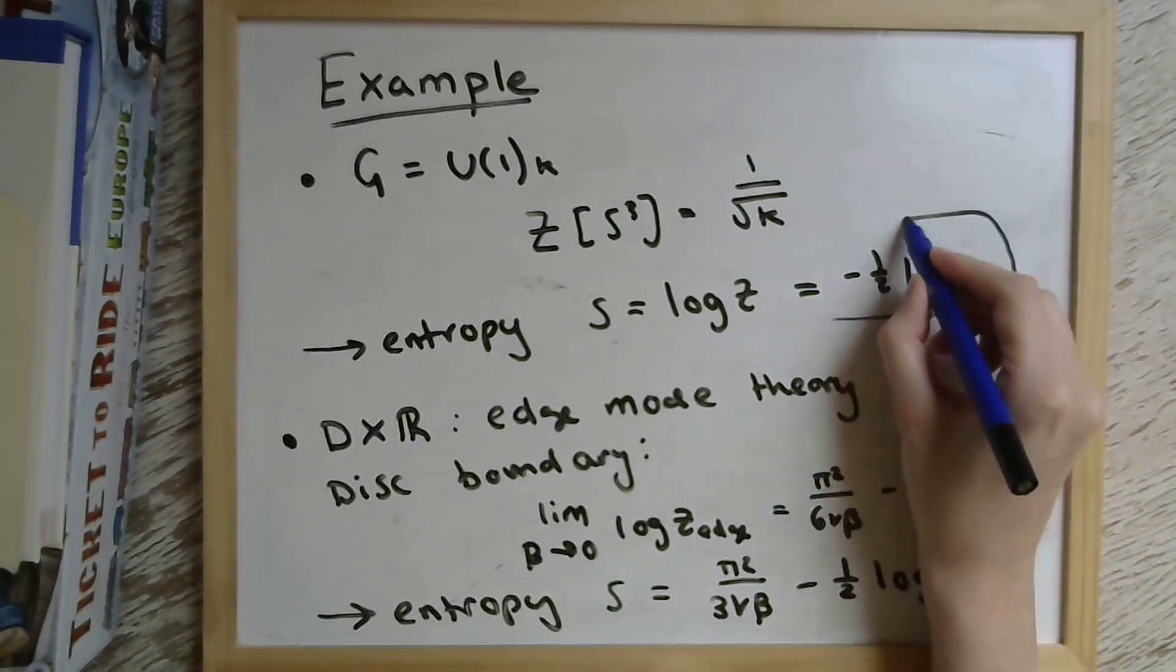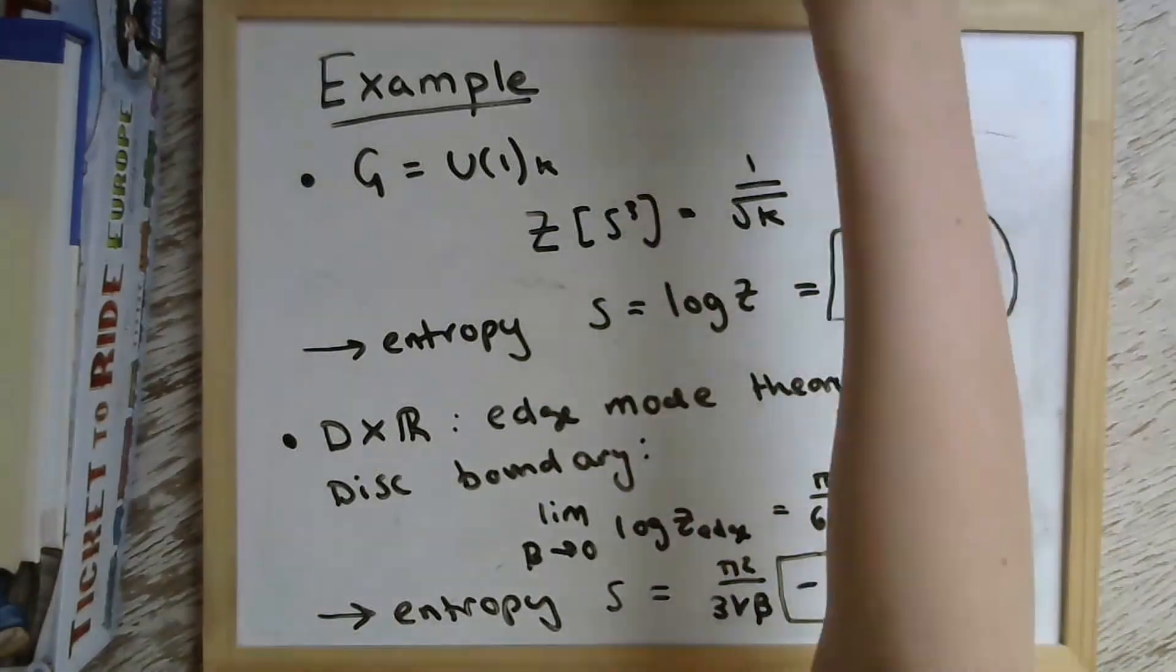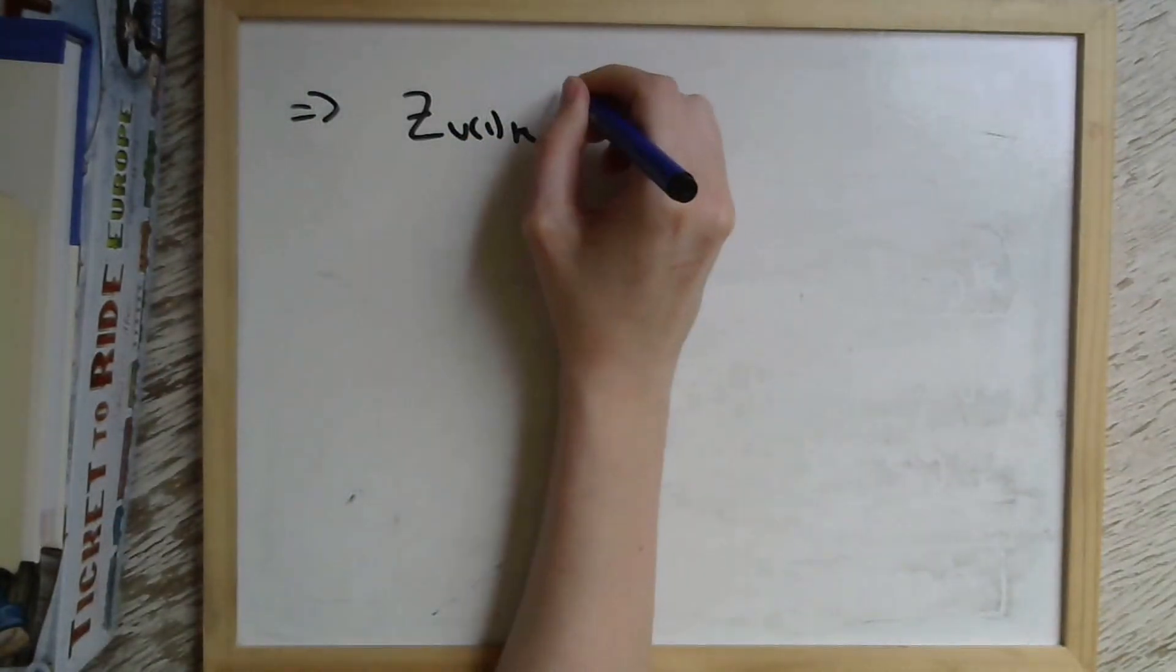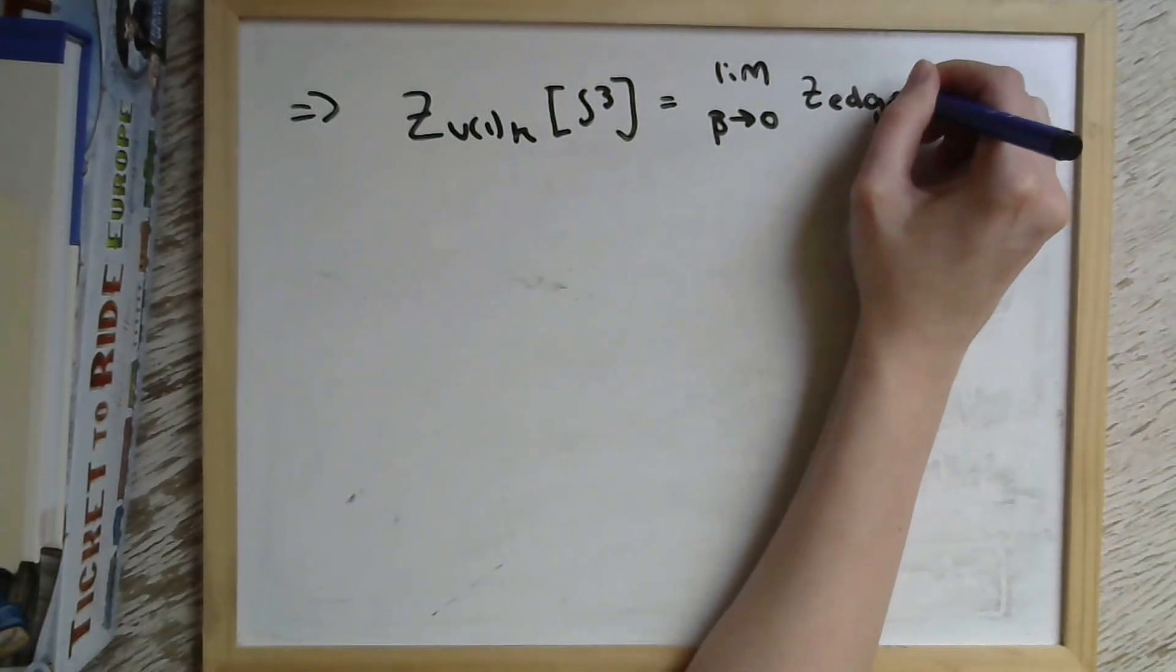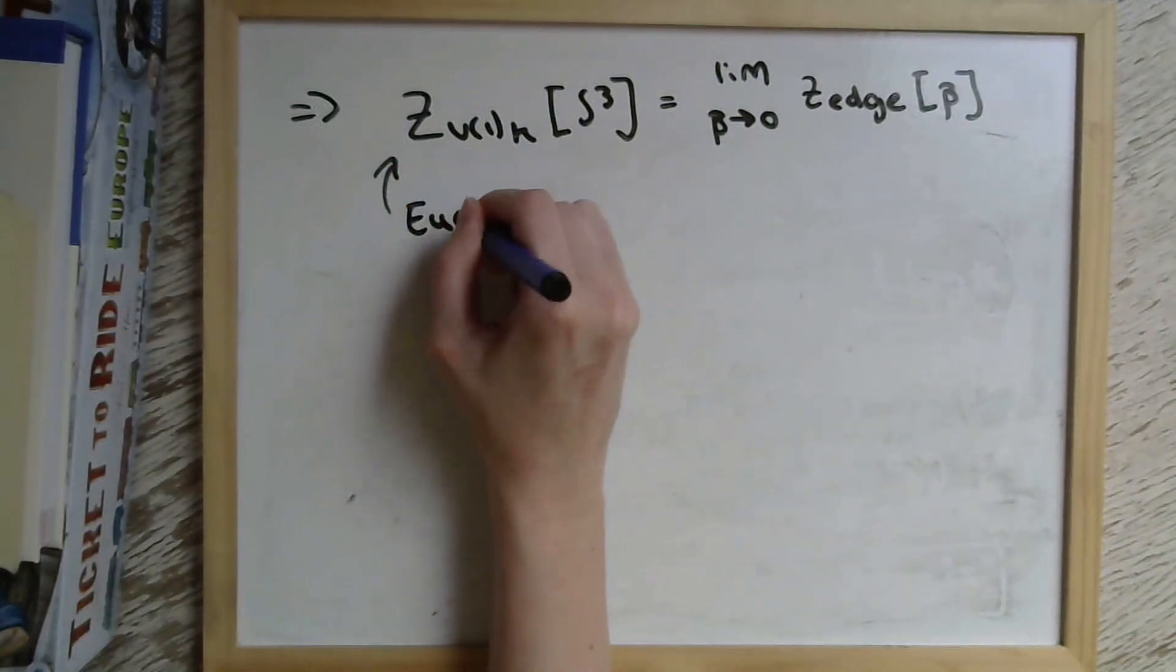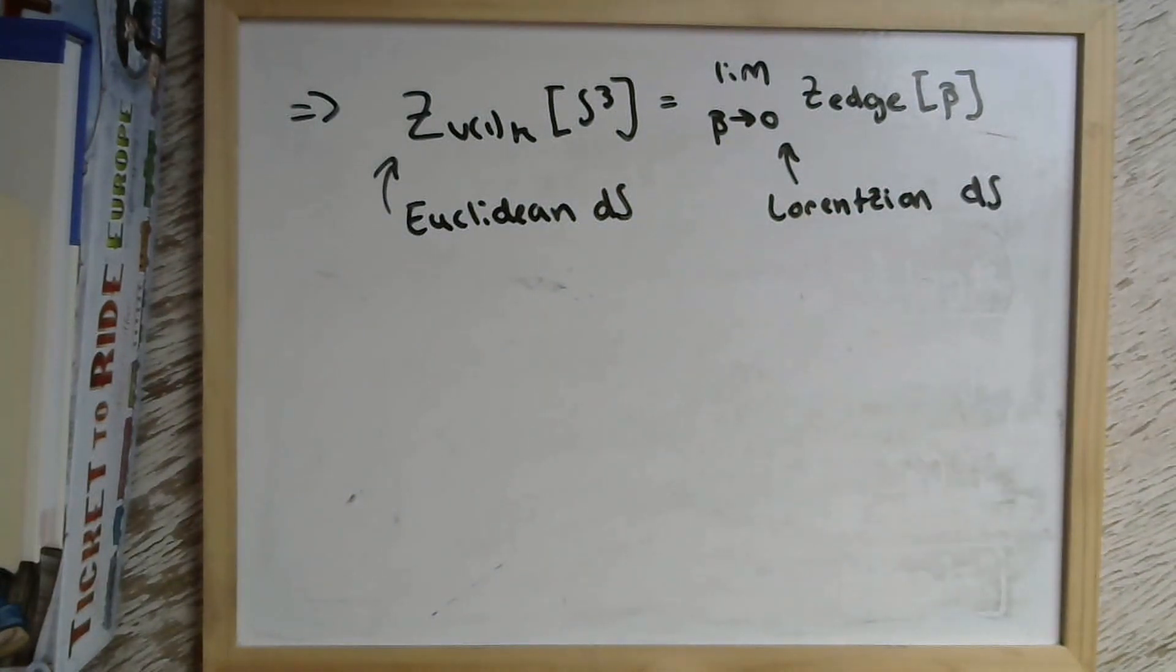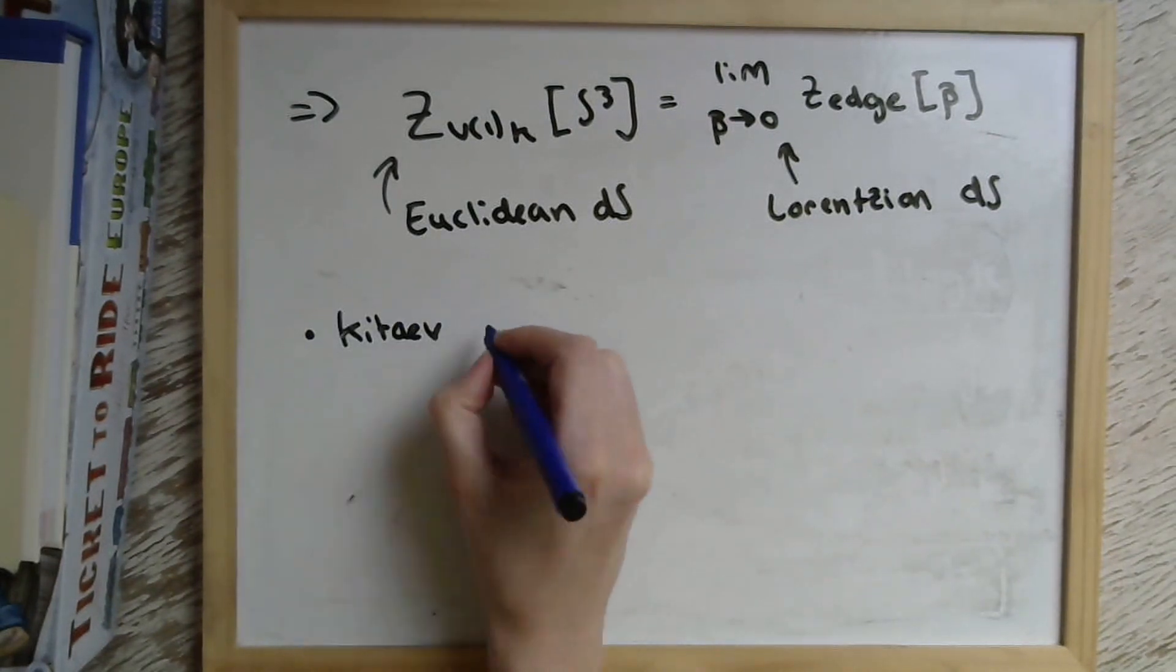What we notice is that even though we've done very different calculations on totally different manifolds, we've got this same -½ log K term in both cases. And it's not obvious why we should get the same contribution to the entropy in both of these situations unless we put this in the context of de Sitter. So we've shown even in this very, very simple Abelian case that the three sphere partition function has an equivalence with the high temperature limit of the edge mode theory partition function. And when we give this the context of saying that we're doing a Euclidean de Sitter calculation on the one hand and the Lorentzian de Sitter calculation of the static patch on the other hand, it makes sense that we should get the same contribution to the entropy.